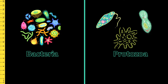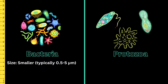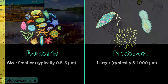The third difference is regarding size. Bacteria range from 0.5 to 5 micrometers — comparatively smaller than protozoans. Whereas protozoans are large, typically ranging from 5 to 1000 micrometers.